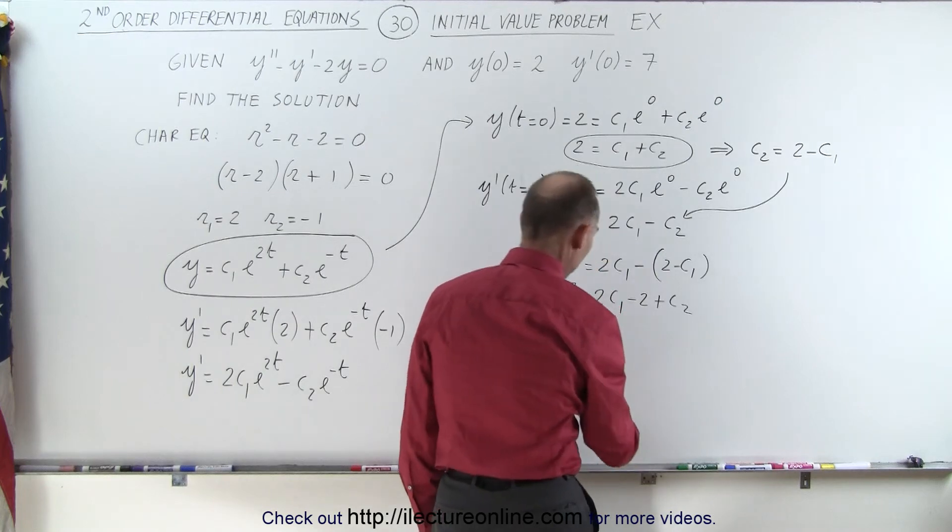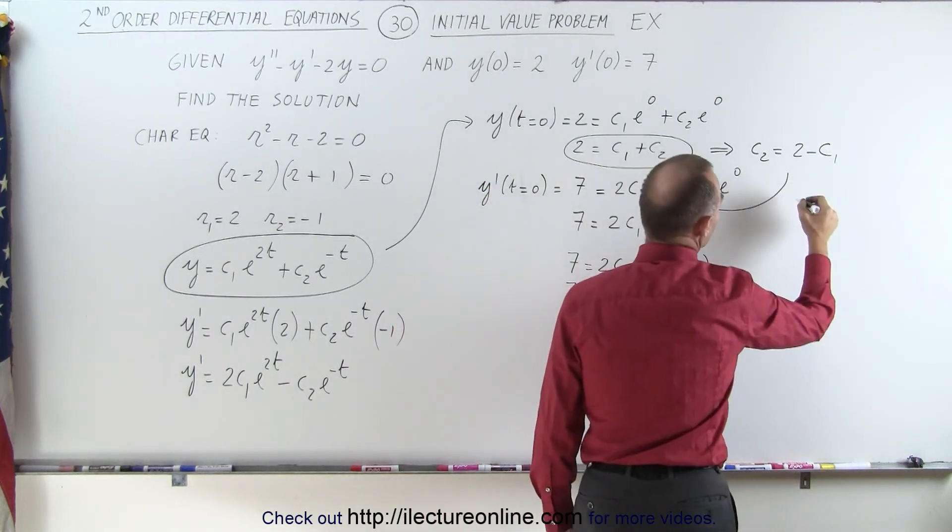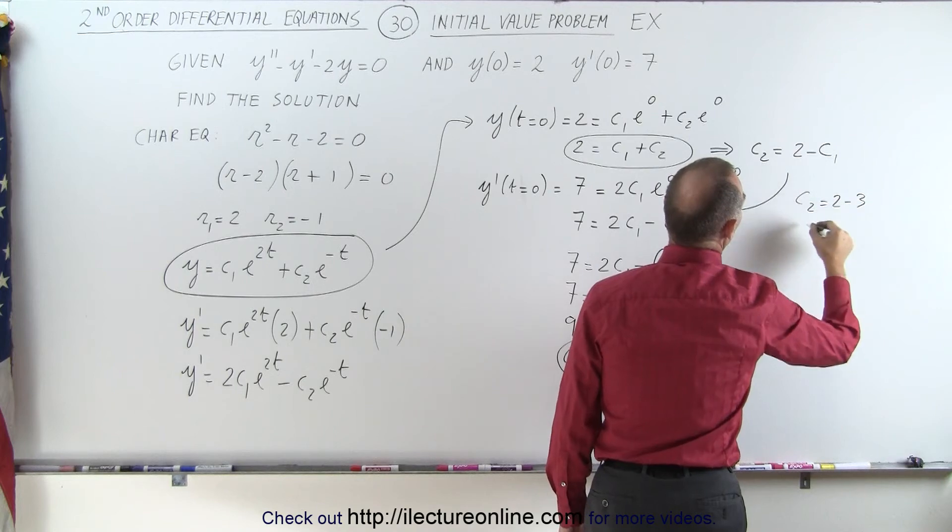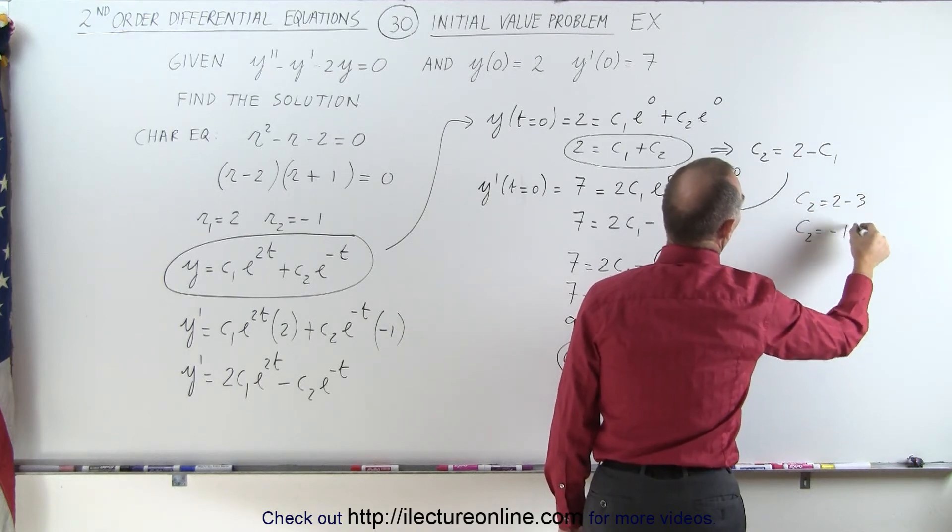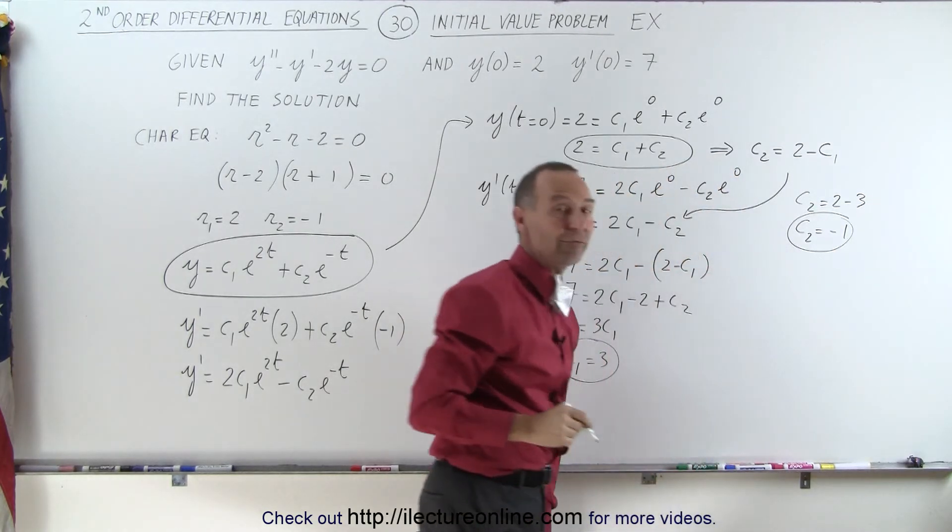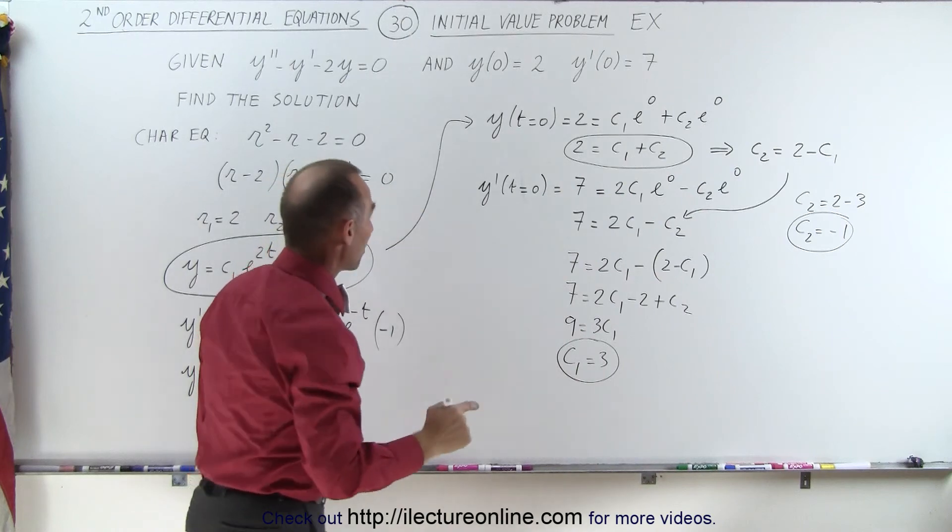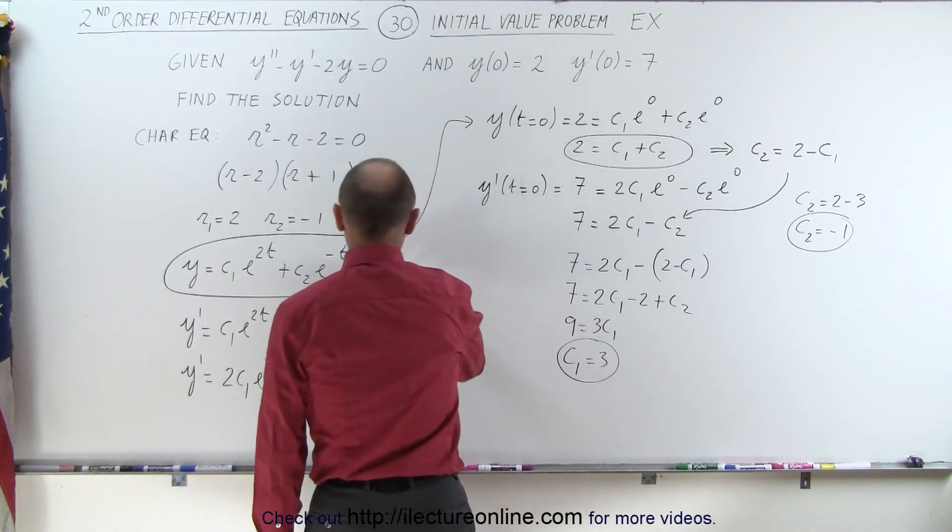Well, if c1 is equal to 3, we can come back up here. c2 is equal to 2 minus 3, or c2 is equal to minus 1. So now we have the two values for our two constants.